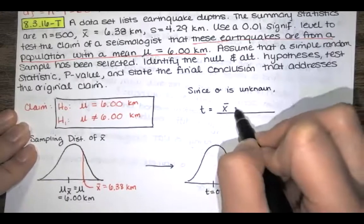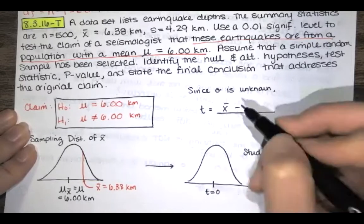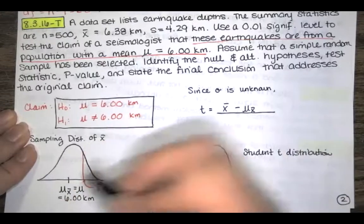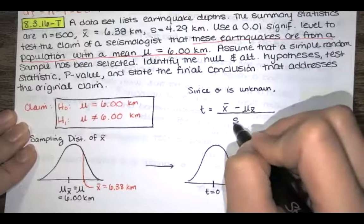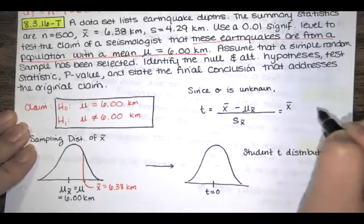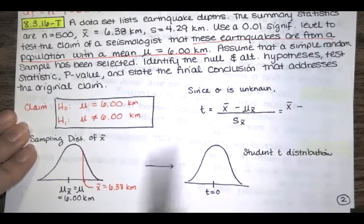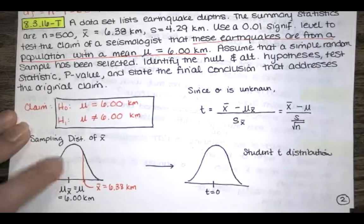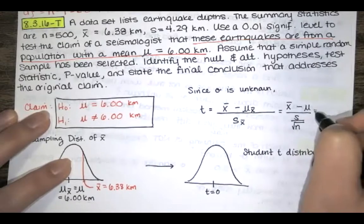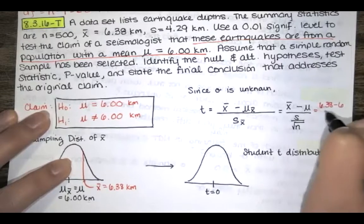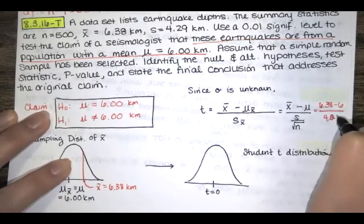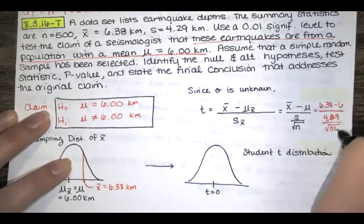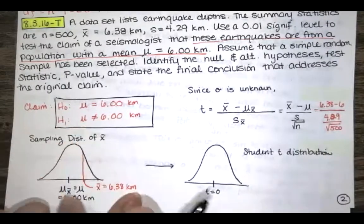We take X-bar and subtract the mean of the sample means, then divide by the standard deviation, which approximately equals the sample standard deviation divided by the square root of the sample size. So we have the sample mean minus the assumed population mean of 6.00 kilometers divided by the sample standard deviation 4.29 divided by the square root of the sample size 500.